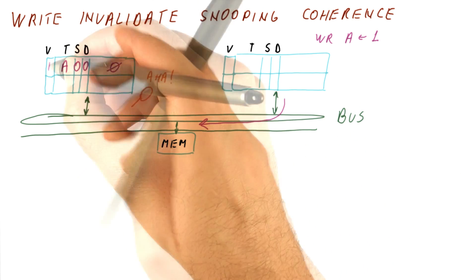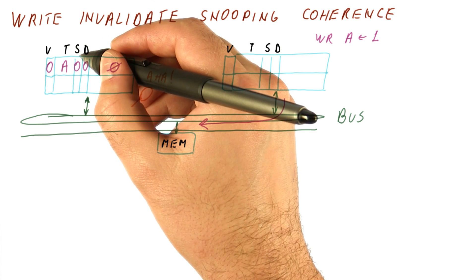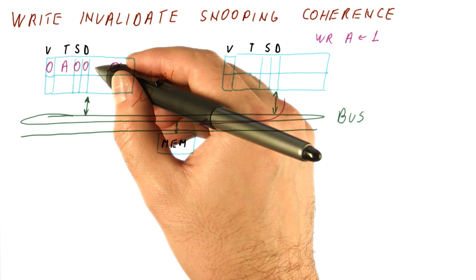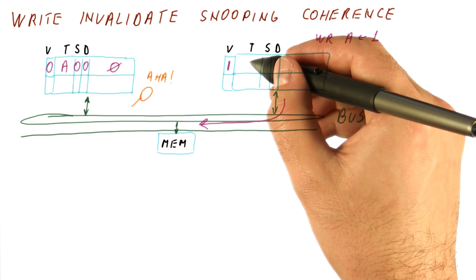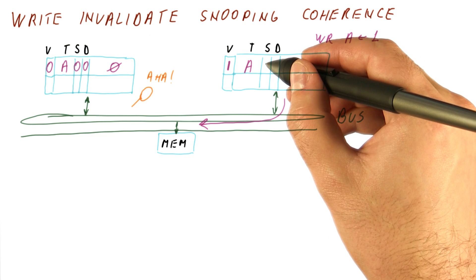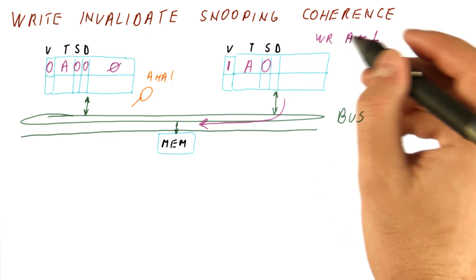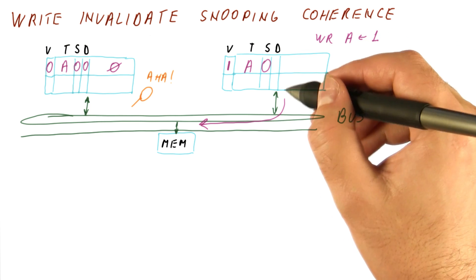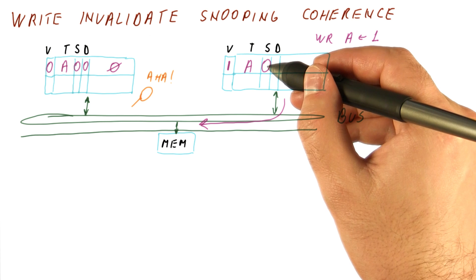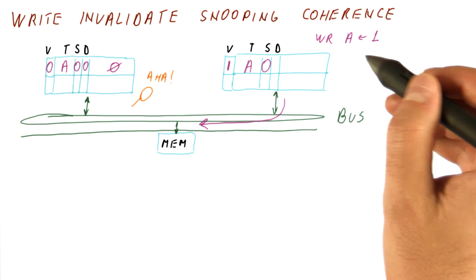In a write invalidate protocol, all we do is change the valid bit to zero. So now that cache will miss on its next read. The writing cache gets its block marked valid and not shared — every time we do a write and broadcast it, we know it's not shared because all the other copies have been invalidated.